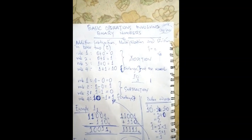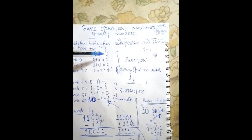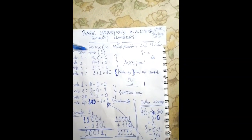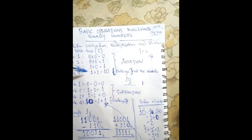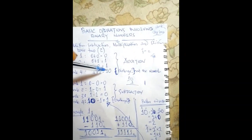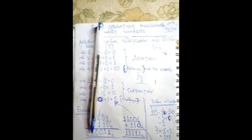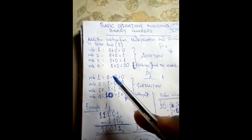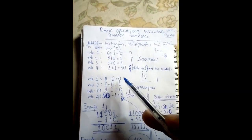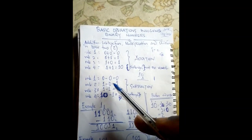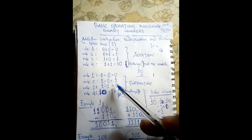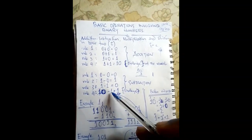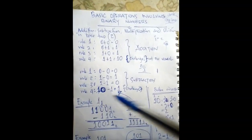I want you to take note of these rules: zero plus zero in base two gives you zero, zero plus one will give you one, one plus zero will give you one, one plus one will give you ten. And then zero minus zero gives you zero, one minus zero will give you one, one minus one will give you zero, ten minus one will give you one. I'm going to explain how that comes about.